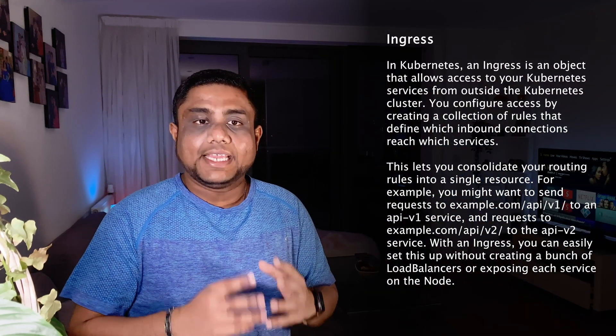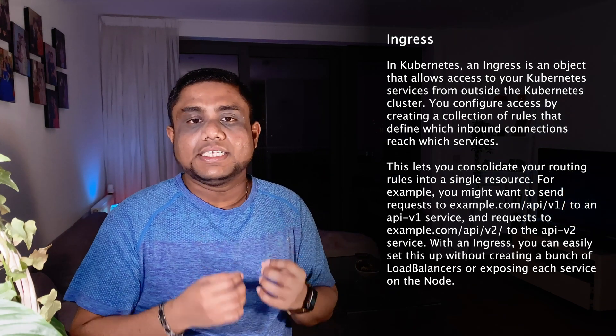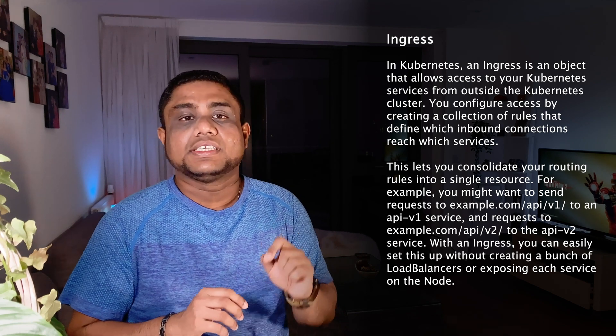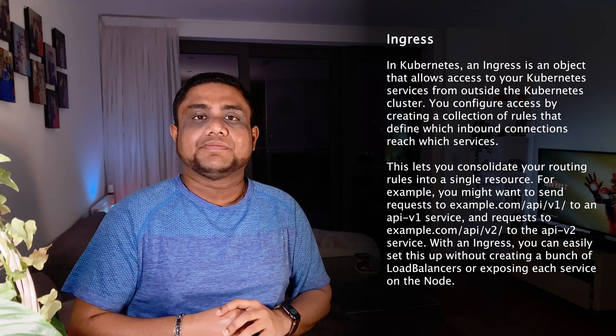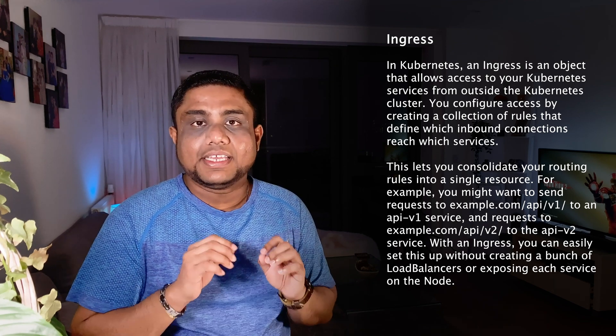In this scenario, you can use ingress, which can expose HTTP and HTTPS routes from outside the cluster to the services within the Kubernetes cluster. Traffic routing is controlled by the rules defined in the ingress resource. Ingress controller and ingress resources will handle these functionalities, and Kubernetes will not come with the ingress controller by default, so if there is no ingress controller set up, ingress resources will not work.